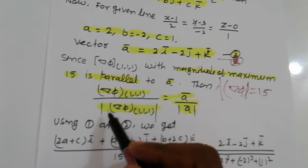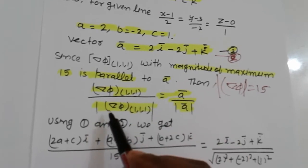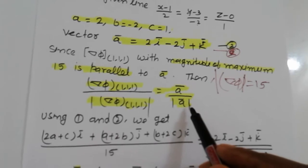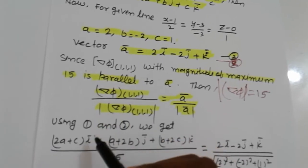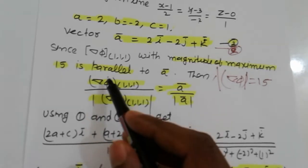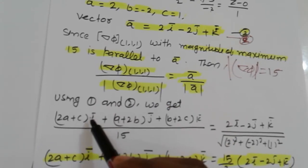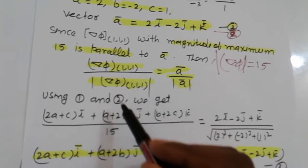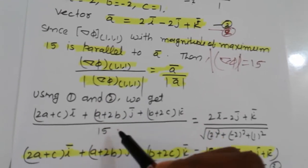Nabla phi at point (1,1,1) divided by magnitude of nabla phi equals vector a upon magnitude of vector a. Using equations 1 and 2, we put the value of nabla phi.